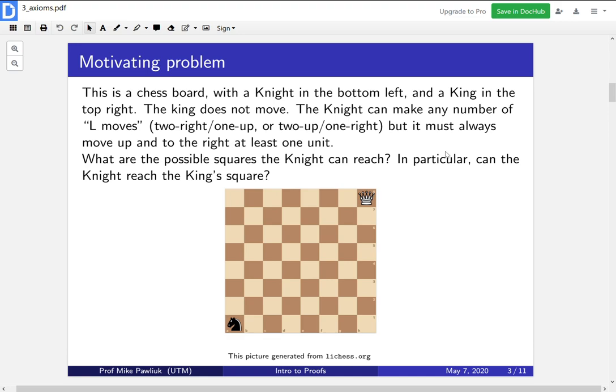This is a chess board and there's a knight in the bottom left. Here's the knight, it's the horse. And there's a king in the top right. In this problem, the king won't move, it'll just stay there, and the knight can make any number of L moves at once. So an L move is two to the right and one up, or it's two up and one to the right. In our particular setting, it always has to move up and to the right, at least one unit. So we're not going to allow the knight to move backwards at all. It always has to be moving towards the king.